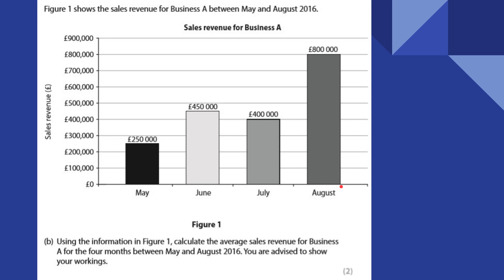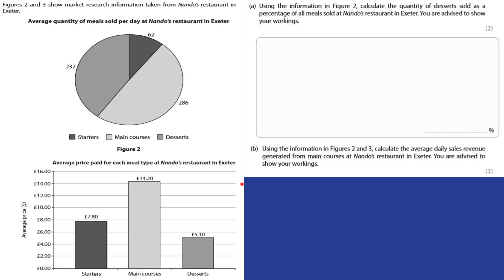Using the information in figure one, calculate the average sales revenue for business A for the months between May and August. So we've got four months. All we've got to do is add each of these up: 250,000 plus 450,000 plus 400,000 plus 800,000, and divide by four. Really straightforward.